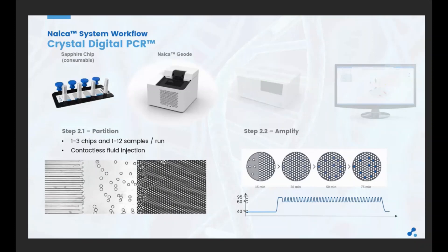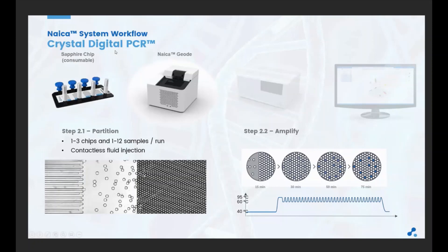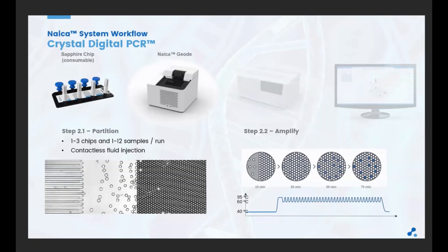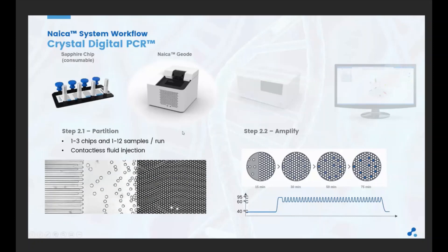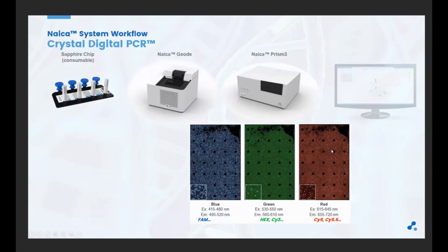Once the sample is loaded into the chips, you place them into the NAEKA geode, which can receive up to three chips — meaning up to 12 samples per run. The first step in the geode is an increase of pressure, leading to a contactless fluid injection, pushing the sample through the microfluidics in the chips and generating droplets with a tightly controlled size, as shown in the video. Directly after partitioning, PCR amplification starts within the same instrument. Once amplification is done, the chips are placed in the PRISM free-imaging system to read droplet fluorescence in 10 minutes across three channels — blue, green, and red — allowing easy multiplexing of three targets.